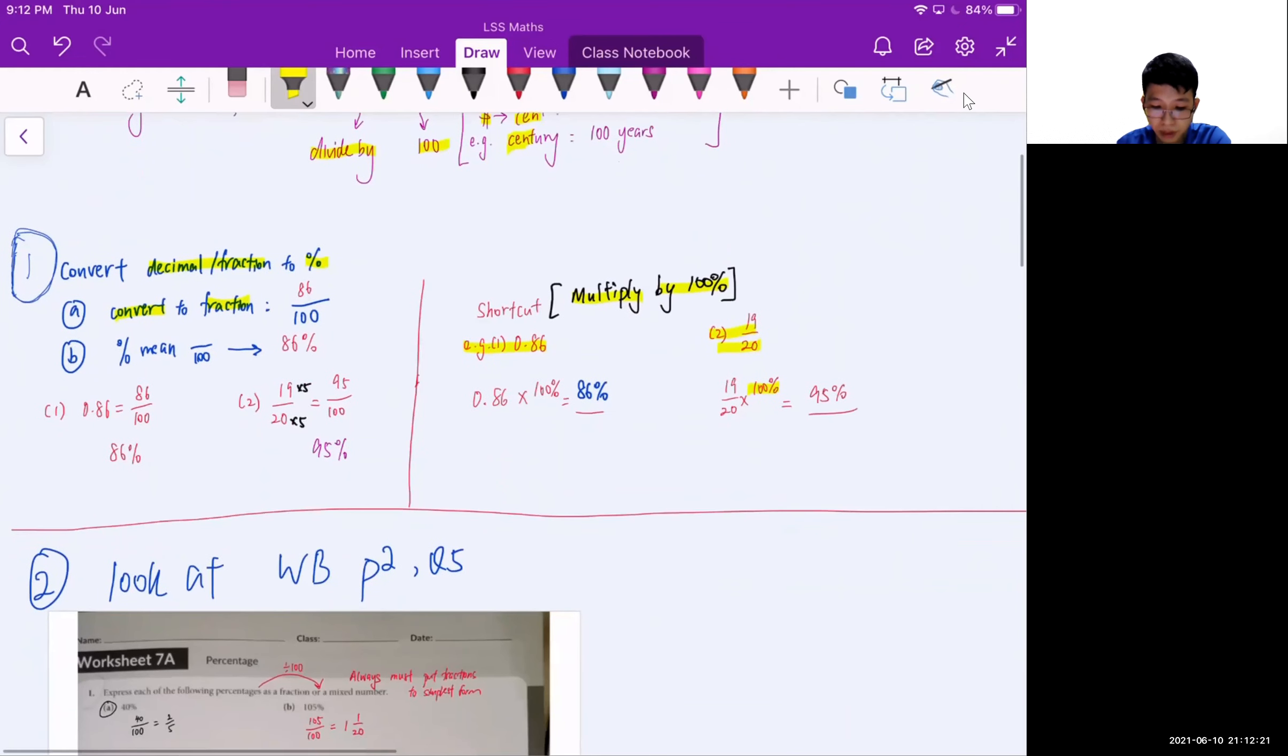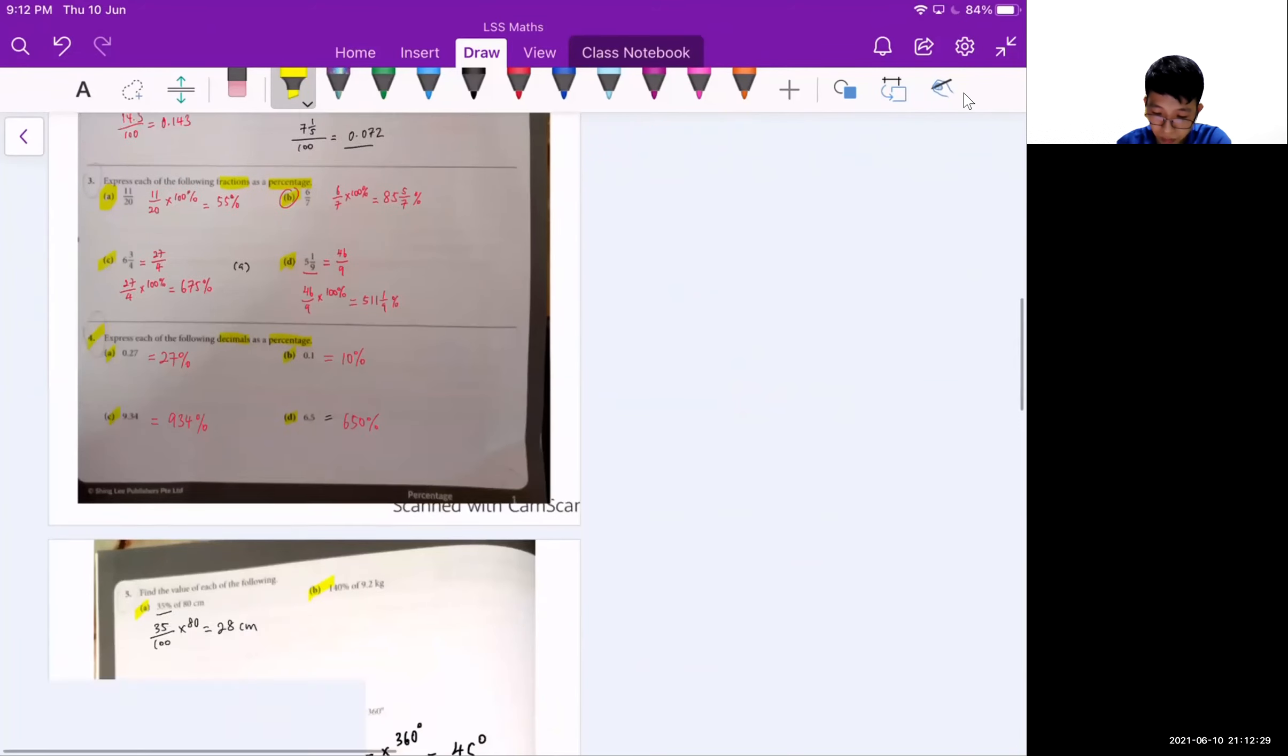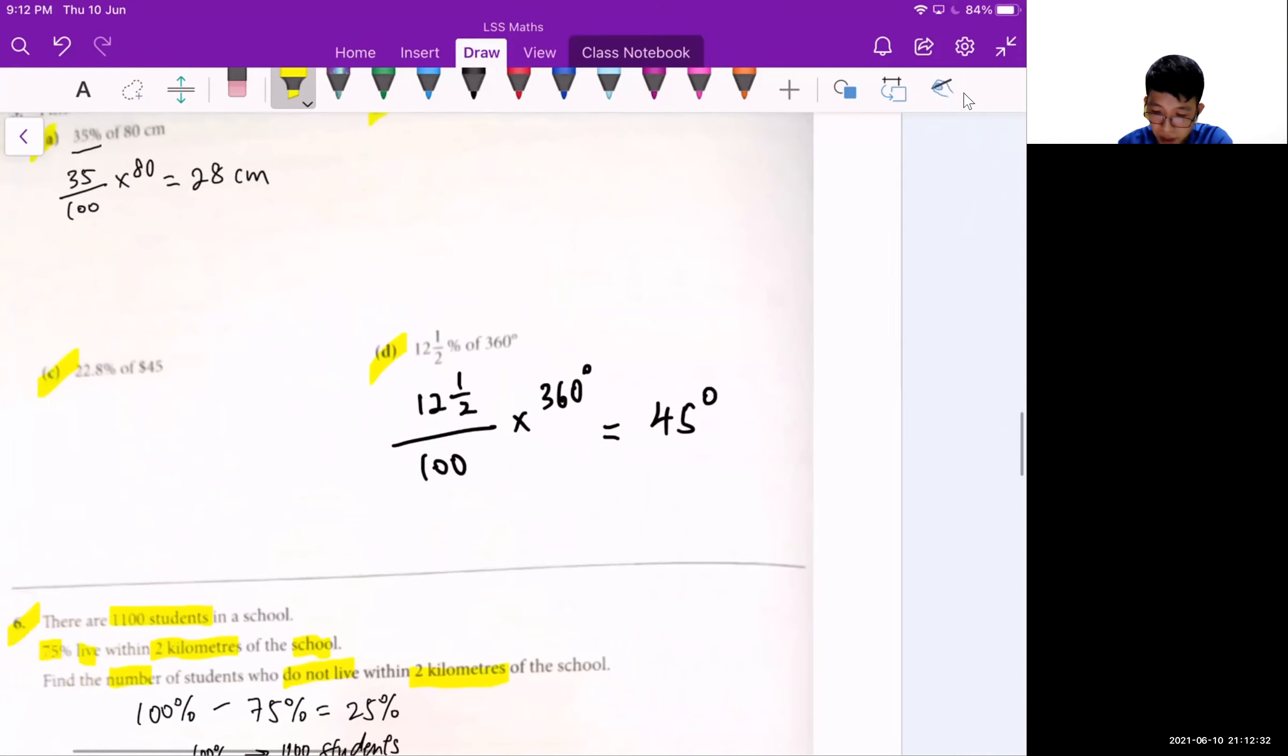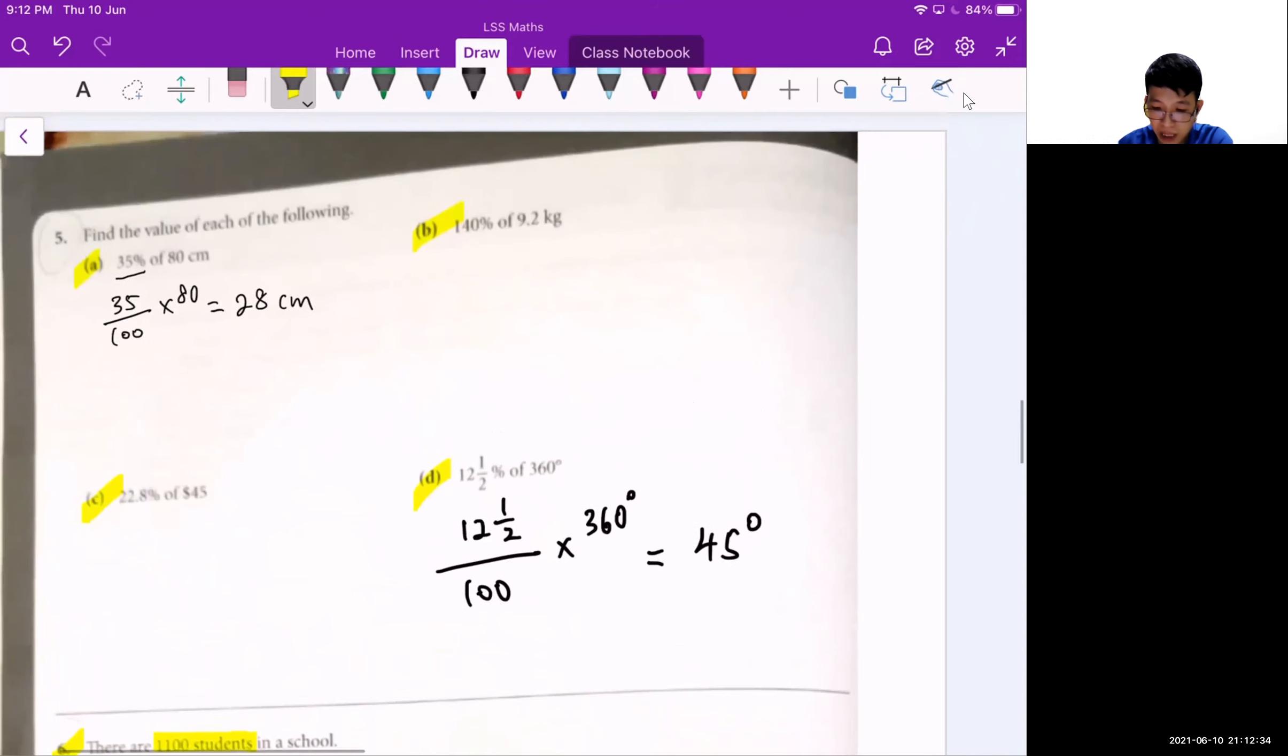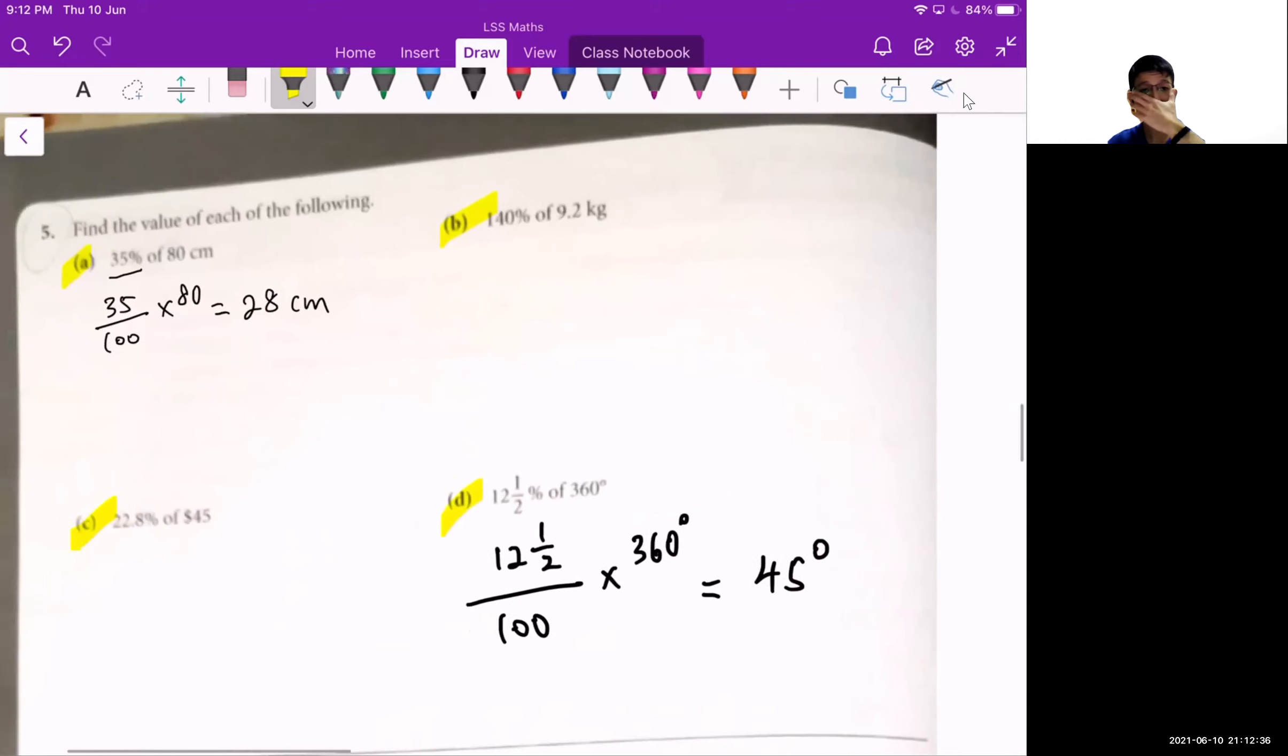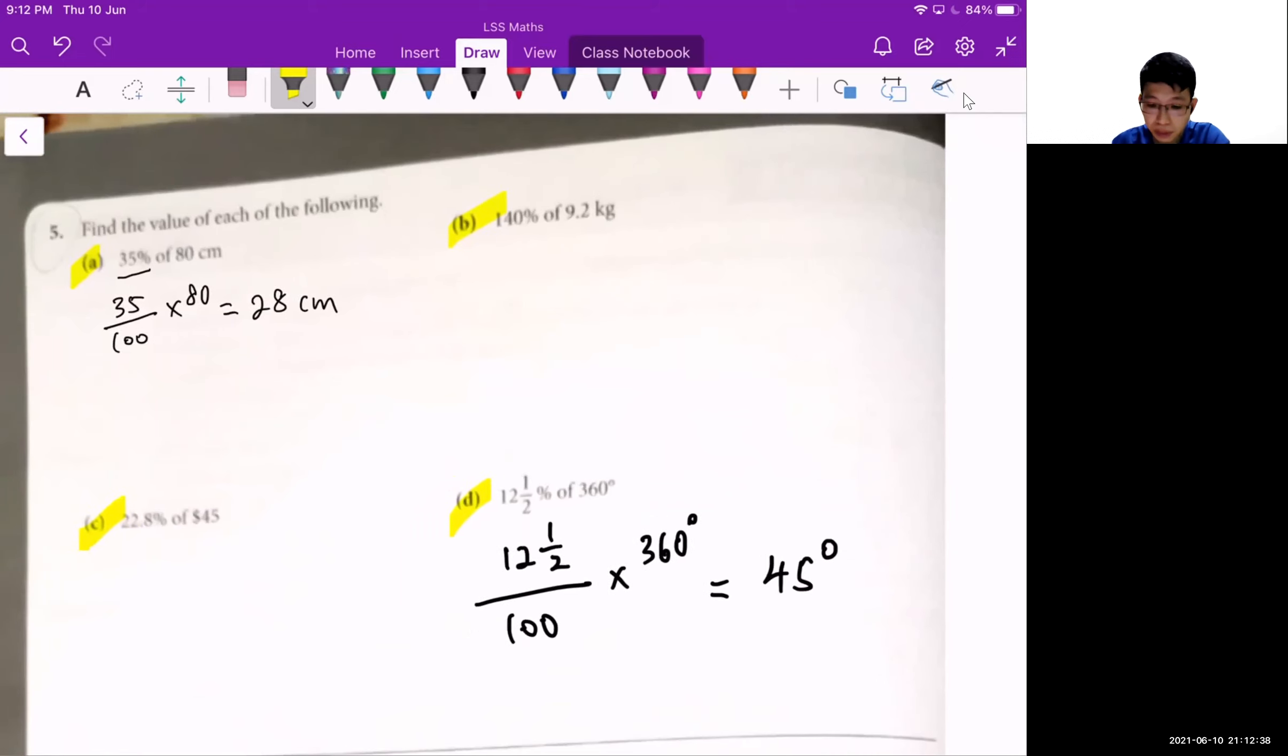An example of such concepts, let's look at workbook page 2, question 5. So for question 5, let's look at 5b. 5b asks us to calculate the value for 140% of 9.2 kg.